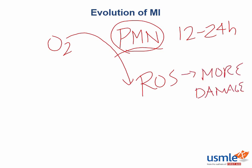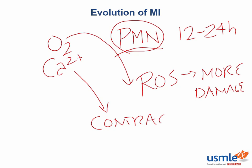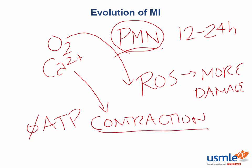What else is delivered to the infarcted area during reperfusion? Calcium. Calcium in the blood is introduced to recently damaged myocytes, and the sarcomeres within those myocytes are exposed to calcium, leading to contraction. But since there is no ATP, we cannot uncock the myosin head and the sarcomeres remain contracted. This is the whole principle behind contraction band necrosis.